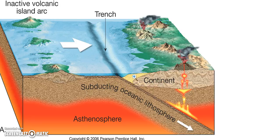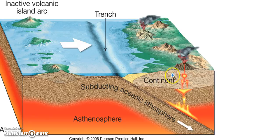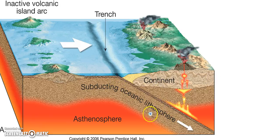Different features that can be created at a convergent boundary include mountains and volcanoes. A lot of great mountain ranges around the world have been created by convergent boundaries, including the Andes, which we'll get to shortly. You can get volcanoes and earthquakes at convergent boundaries. The earthquakes can occur along the trench, on the surface, and into the Earth's mantle as the oceanic plate continues to subduct.